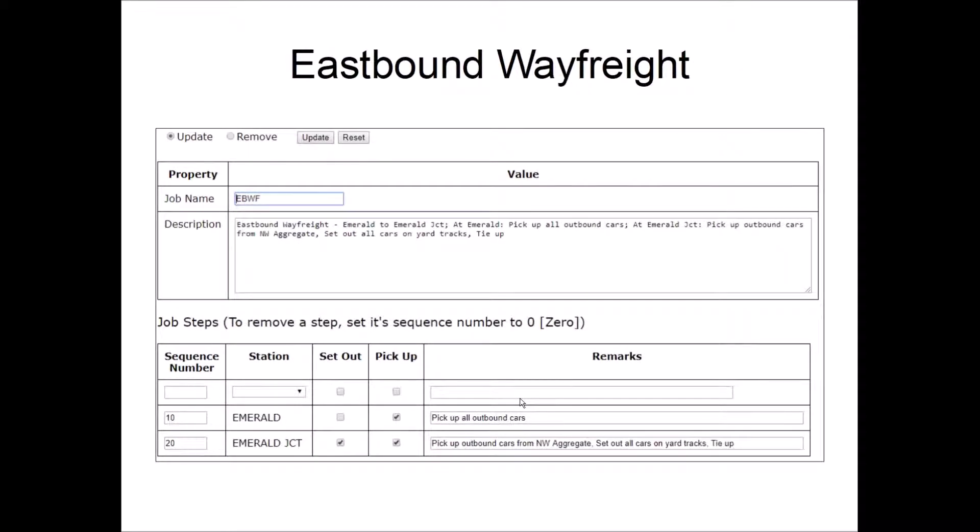Next, we see the eastbound wayfreight's job steps. And it only has two locations, Emerald and Emerald Junction. And as I mentioned before, we need to have it be able to set out and pick up in Emerald. So we'll fix that before we get to actually running the simulation.